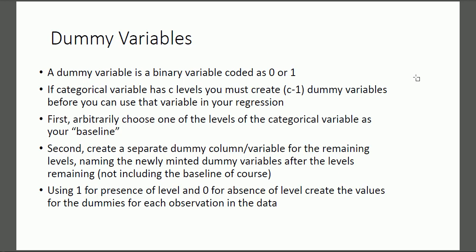We have something called dummy variables that come into play. A dummy variable is a binary variable, which means it's coded as a zero or a one. If a categorical variable has C levels — something like gender has two levels, so C would be two — we must create C minus one dummy variables. For gender, we would create just one dummy variable before using it in regression analysis.